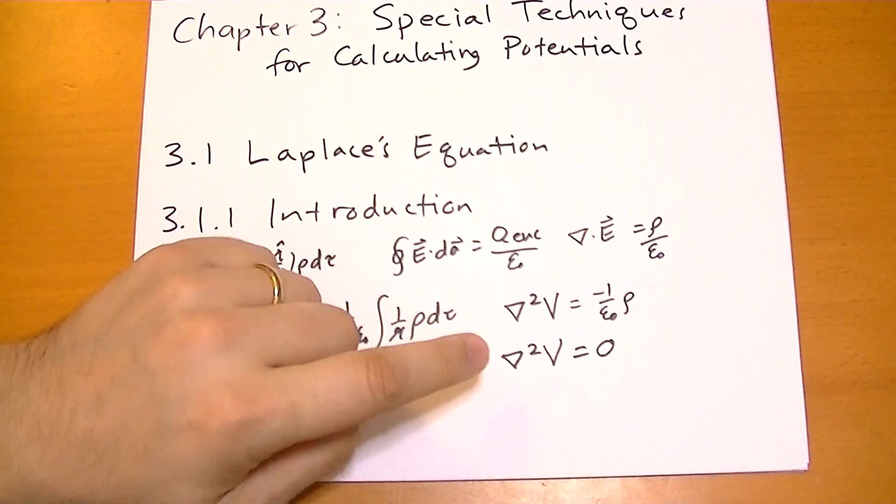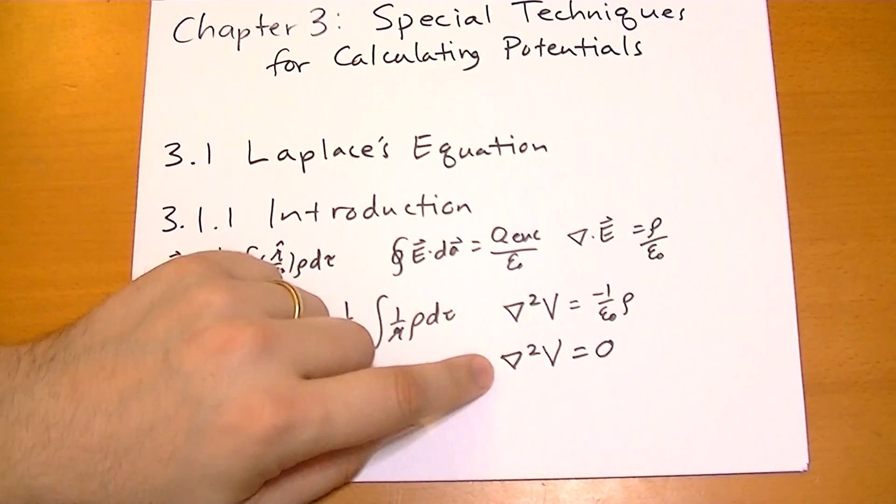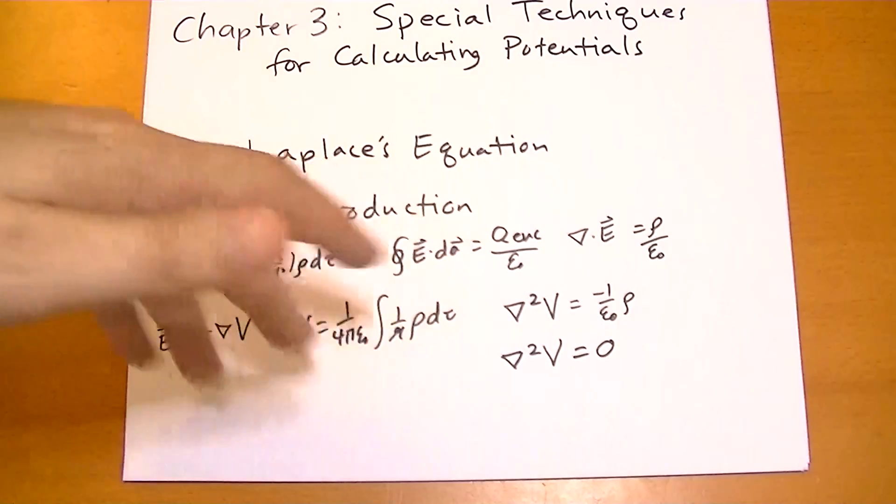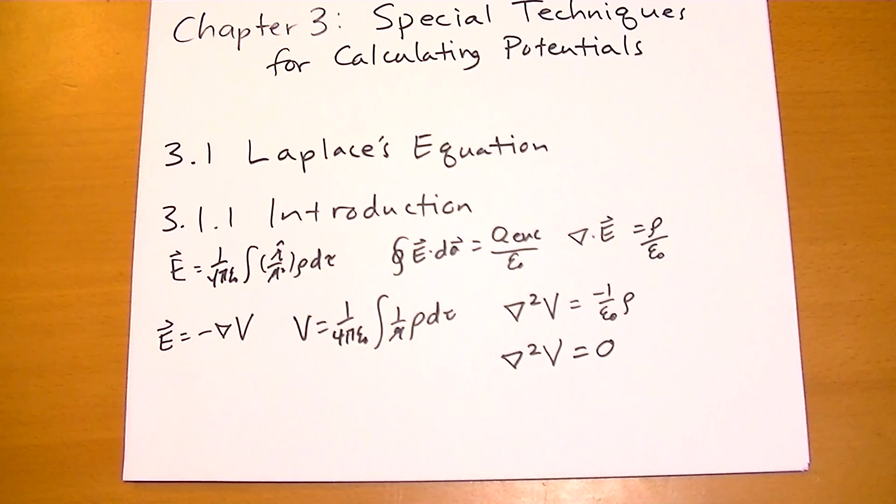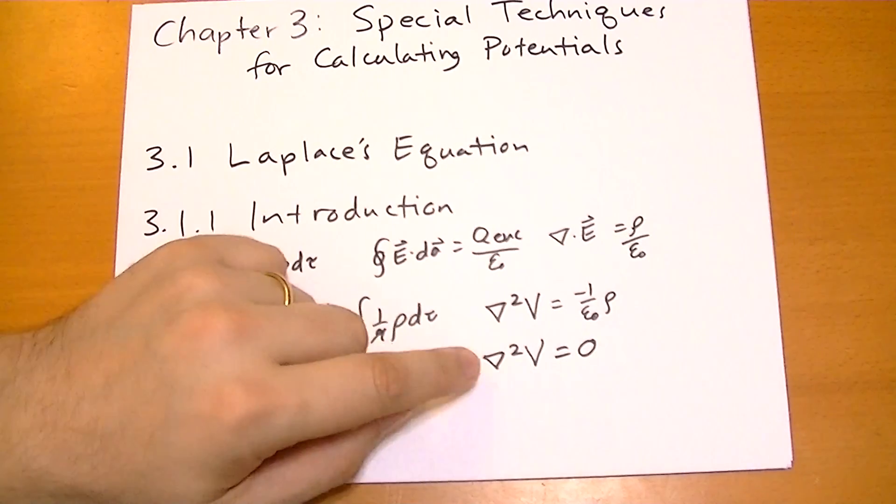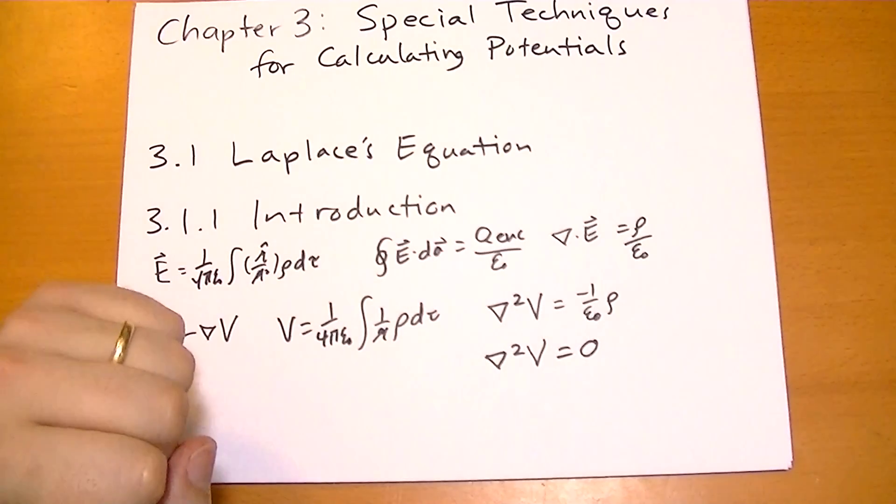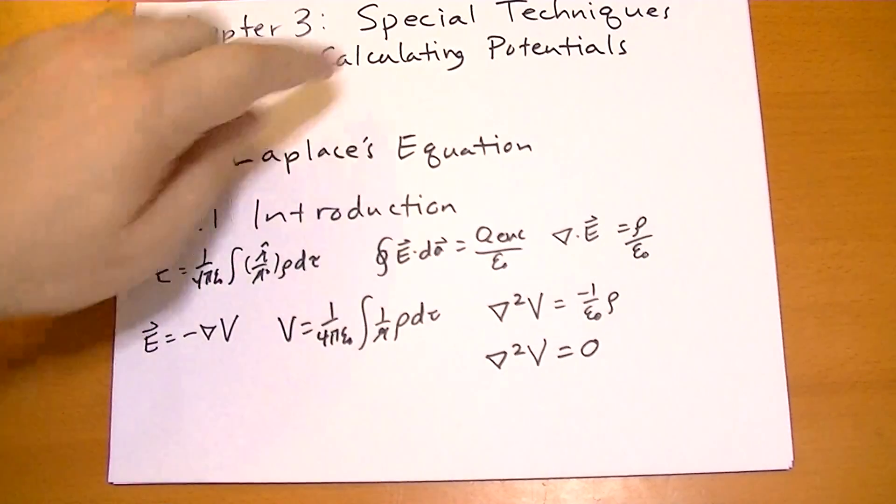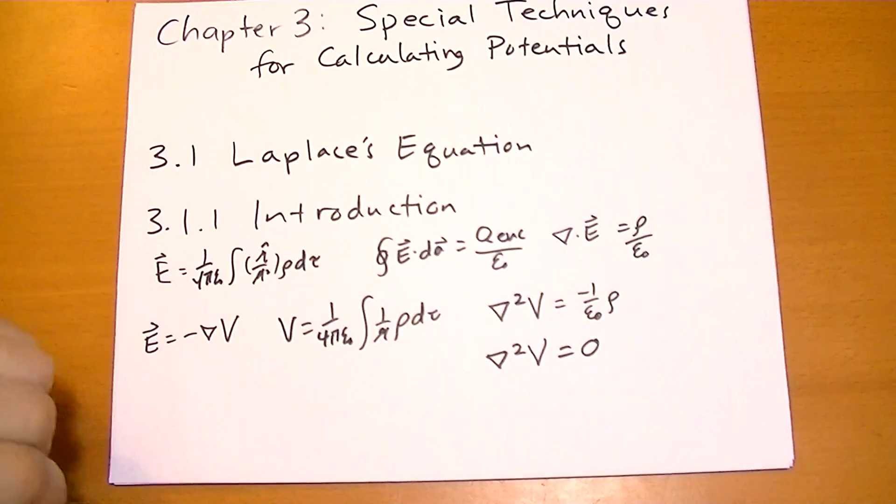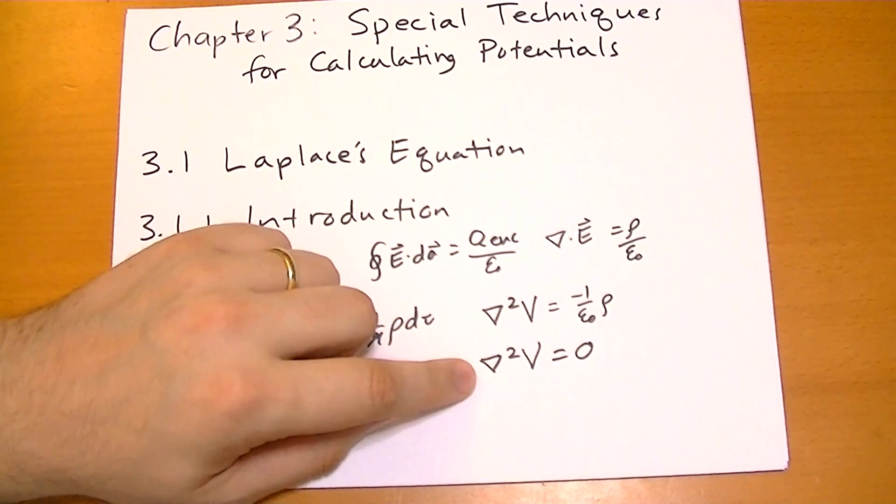Now, Laplace's equation isn't useful if there's no charge anywhere in the universe. In that case, the electric field is zero everywhere, the potential is constant. But it is useful when you're interested in a certain part of space and you know what the potential is around it. And we're going to cover more about how this is actually useful.